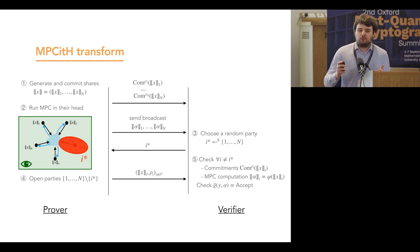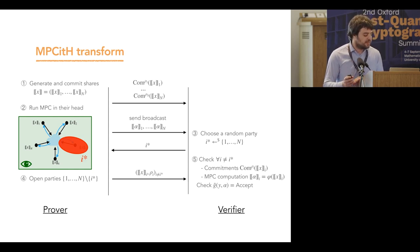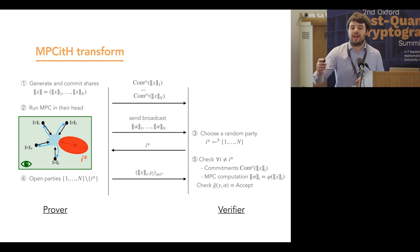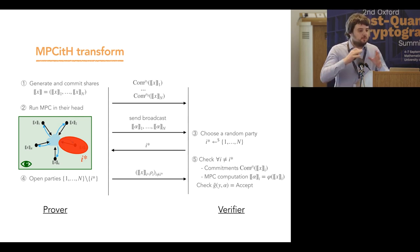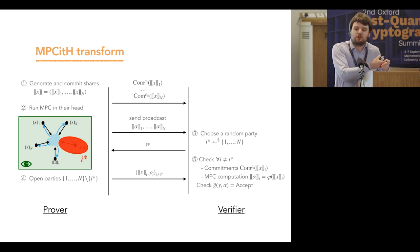The prover reveals the computation of all parties except party i*. Concretely, it reveals the input shares of all revealed parties. This interactive protocol is zero-knowledge because the verifier sees all computations except for one party. Since we have the N-1 private property, seeing all computations except one gives no information about the secret X.